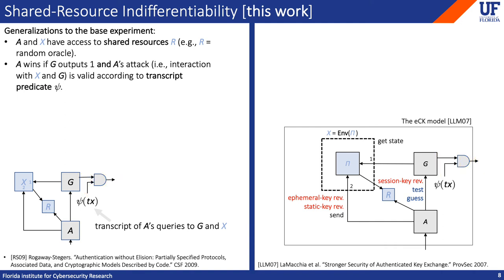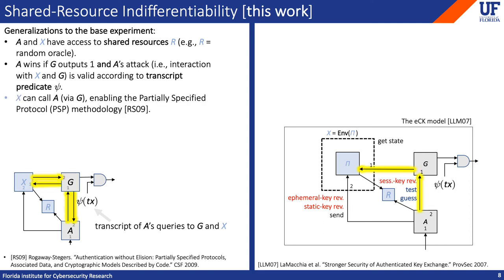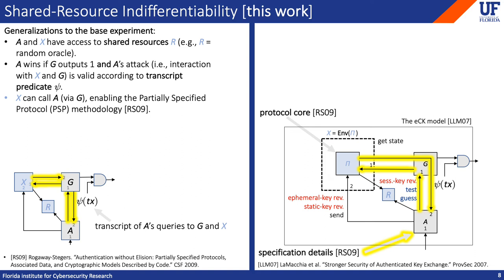The last generalization is intended to simplify the analysis of standards for real-world protocols like TLS. TLS specifies a complex protocol, and most of the details are not necessarily relevant to what we might want to prove about it. The partially specified protocol methodology of Rogaway and Steger provides a nice way to account for these details without needing to specify them exhaustively. Their strategy is to divide a protocol specification into two components: the protocol core, which formalizes elements essential to the security goal, and the specification details, which captures everything else. The protocol core is defined in terms of calls to a specification details oracle, which in the security experiment is answered by the adversary. This formalizes an unusually strong attack model, but one that yields a rigorous treatment of the standard itself.